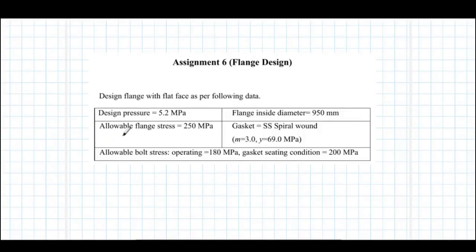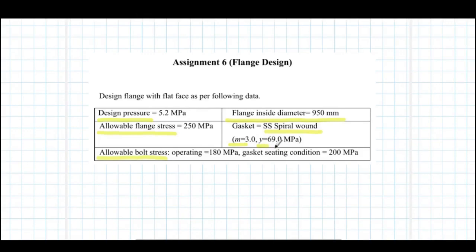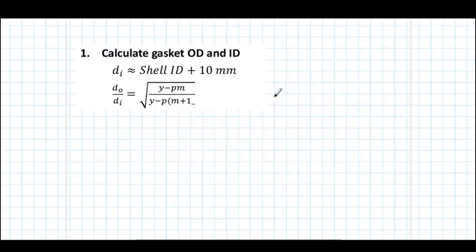Hello everyone. In this assignment we'll be solving a bolted flange design problem. For the problem shown on the screen, the design pressure is given, the allowable flange stress and allowable bolt stress are given, the flange inside diameter is given, the gasket type is given, and the corresponding m and y factors for the gasket are given.